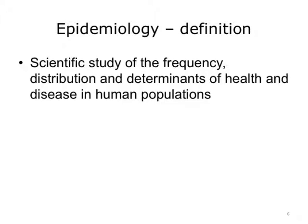Studies focused on the spread of disease within human populations require information from many different sources. Within the health care system, this includes federal, state, and local public health agencies, as well as local health institutions. Information on the health of individuals within communities is collected and consolidated by these organizations in order to understand the bigger picture of what is going on with the population as a whole. These organizations then exchange this information with each other and also with the public.